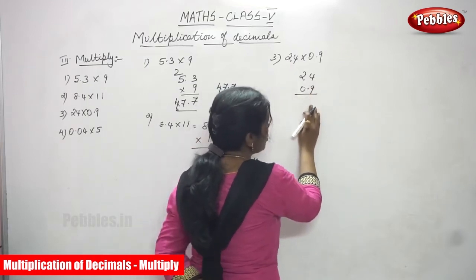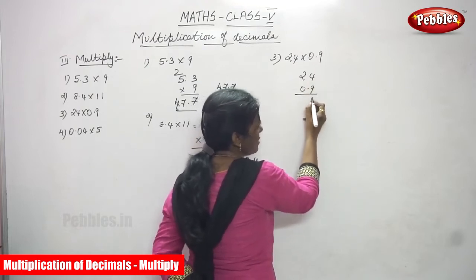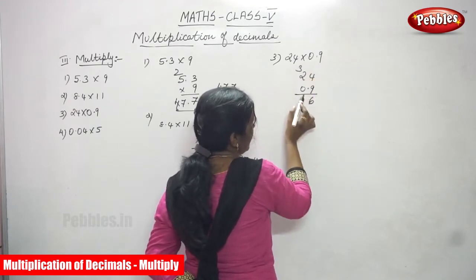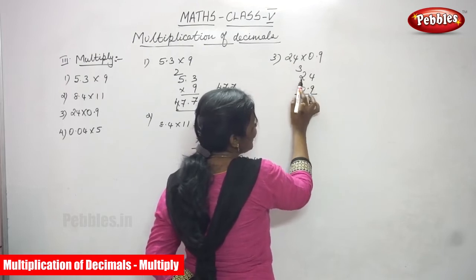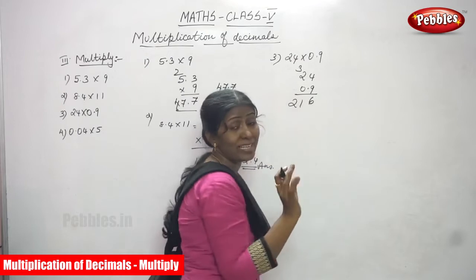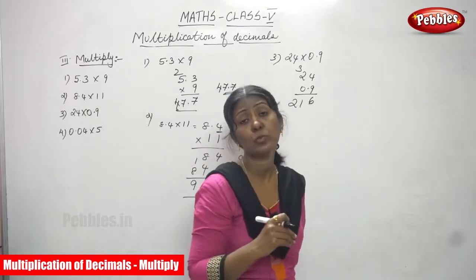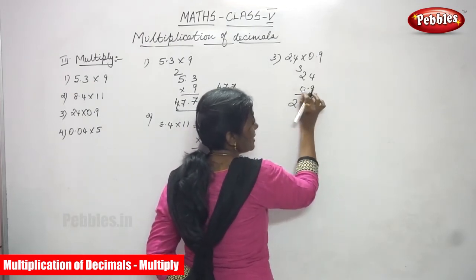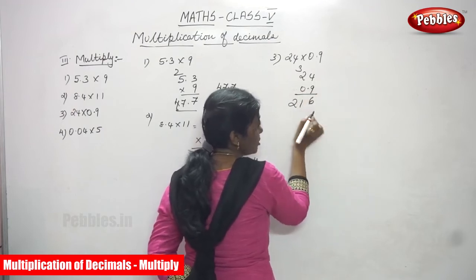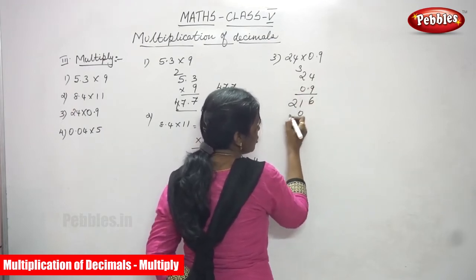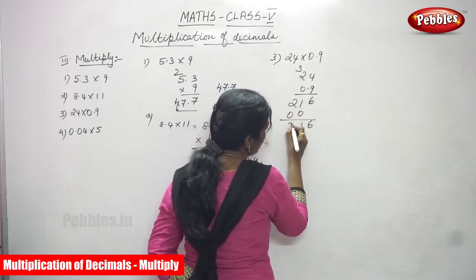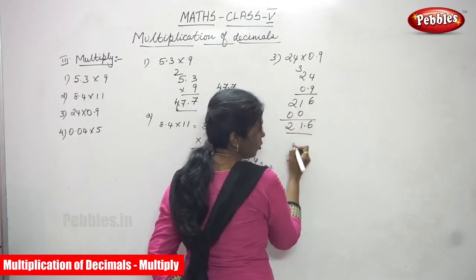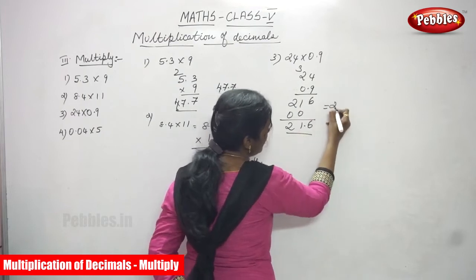Multiply the ones place first: 9 times 4 is 36, write 6 carry 3. Then 9 times 2 is 18, plus 3 is 21. First do not consider the decimal point — multiply first, then place it. For the 0 part: 0 into 4 is 0 and 0 into 2 is 0. The result is 216. Since there is one digit after the decimal point, move one place from the right. The answer is 21.6.